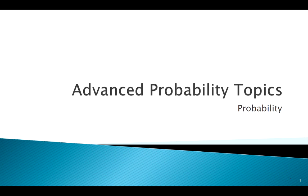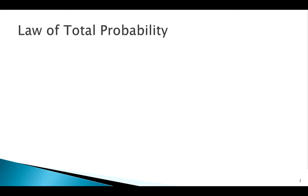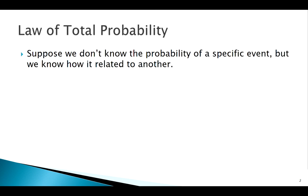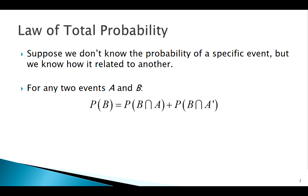There are two main advanced rules we want to talk about. The first is the Law of Total Probability. We use it in a situation where we're interested in the probability of an event we may not know, but we know how that event relates to another one. Take two events A and B — a universal truth is that P(B) equals the probability of B and A occurring, plus the probability of B and A not occurring.